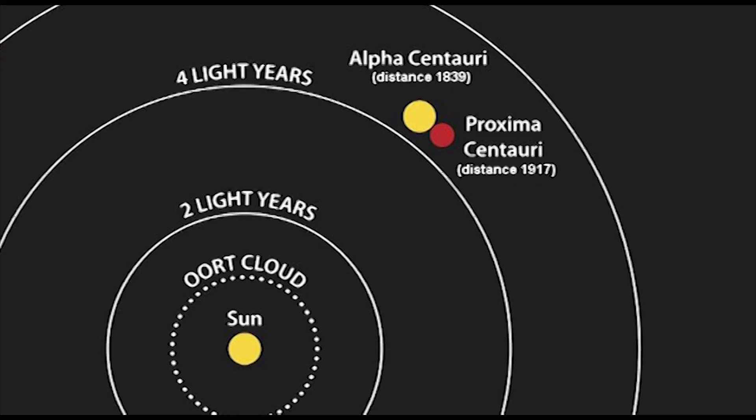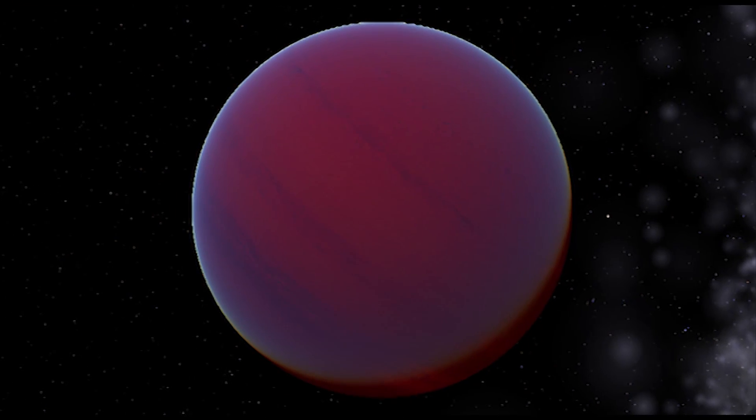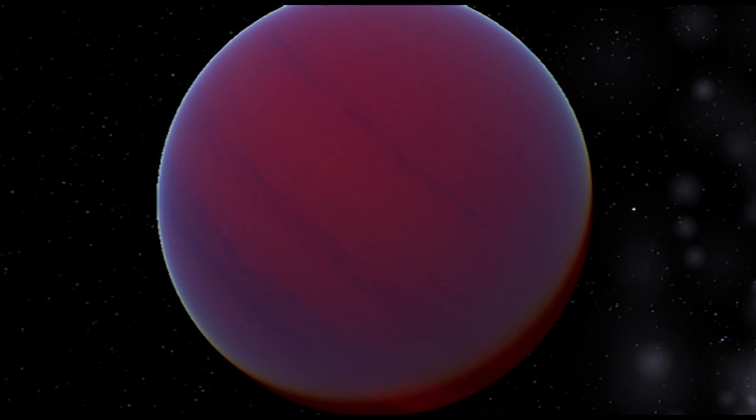The object, a red dwarf nicknamed Schultz star, cruised through the outer region of the solar system known as the Oort cloud. The essentially failed star wasn't alone either—it was accompanied on its travels by an object known as a brown dwarf, making it a binary star system.